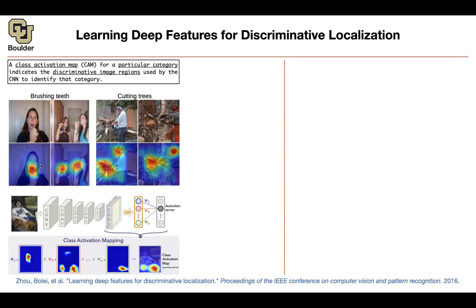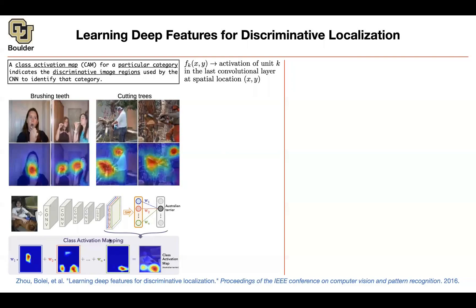The plots you're seeing are computed by taking w1 multiplied by the blue feature map, plus w2 times the second feature map, and so on for the last feature map. In the end, you upsample — increase the resolution of this feature map — to match the resolution of your original image. That's going to show you where the neural network is focusing when predicting, for example, 'Australian Terrier,' where it focuses on the face and tail of the dog.